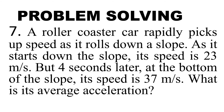Number 7. A roller coaster car rapidly picks up speed as it rolls down a slope. As it starts down the slope, its speed is 23 m per second. But 4 seconds later, at the bottom of the slope, its speed is 37 m per second. What is its average acceleration?